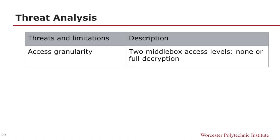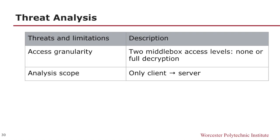The last portion of our results is the threat analysis — these are threats and limitations of our design. First, our design of IFTLS implicitly defines two access levels: no access or full decryption access. We chose this design because it allows maximum flexibility and minimal complexity to the middleboxes in deciding how to analyze traffic. For example, the middlebox may need access to the entire flow in order to classify what is suspicious or unnecessary. Another design choice was that while the server traffic to the client is also sent over IFTLS, it is not routed through the middlebox, because our purpose is to enable users to view data emitted from their IoT devices.